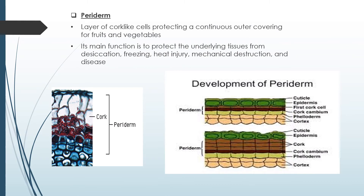The periderm is a layer of cork-like cells providing a continuous outer covering for fruits and vegetables. Its main function is to protect the underlying tissue from desiccation, freezing, heat injury, mechanical destruction, and disease.